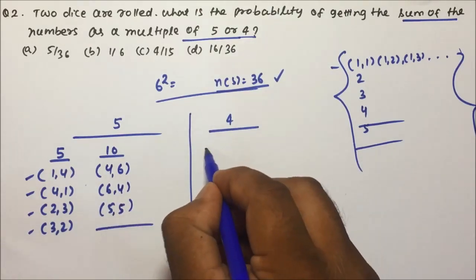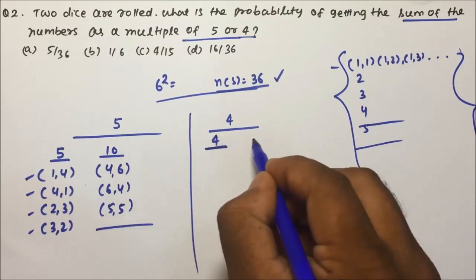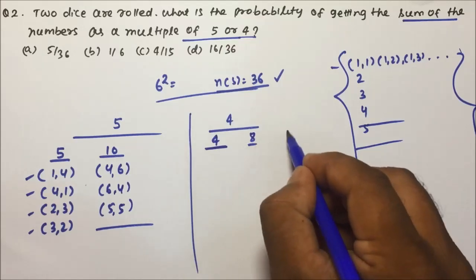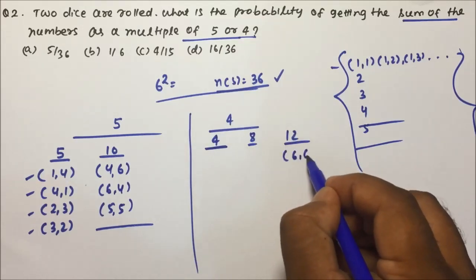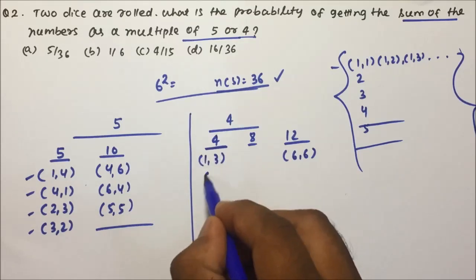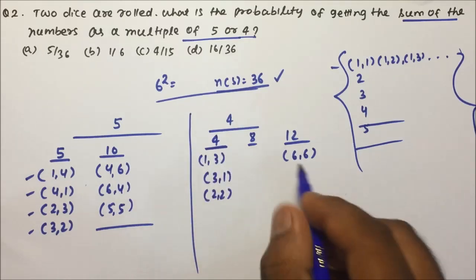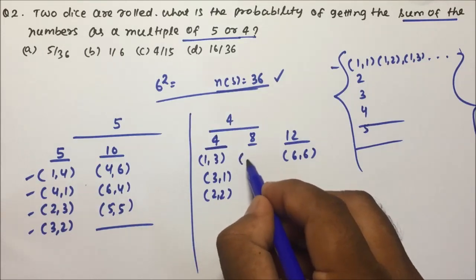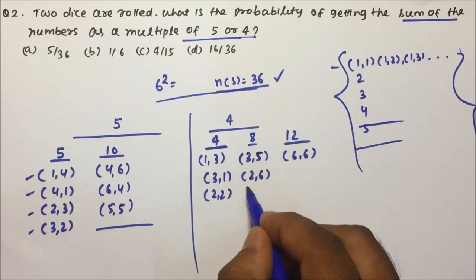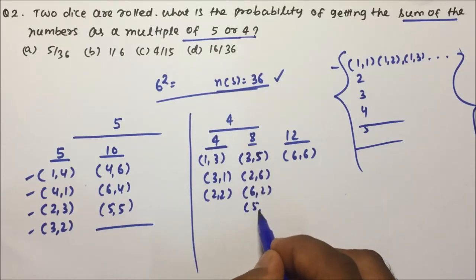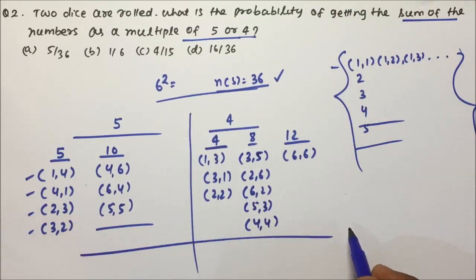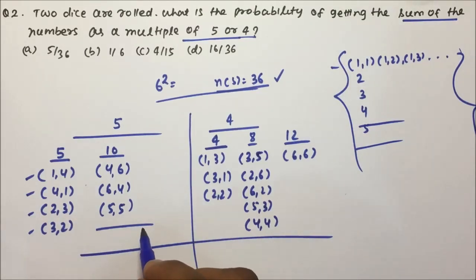Now for multiples of 4: the possible sums within range are 4, 8, and 12. For a sum of 12: only (6,6) — one combination. For a sum of 4: (1,3), (3,1), and (2,2) — three combinations. For a sum of 8: (3,5), (2,6), (6,2), (5,3), and (4,4) — five combinations. So these are all the combinations whose sum is either divisible by 5 or by 4.